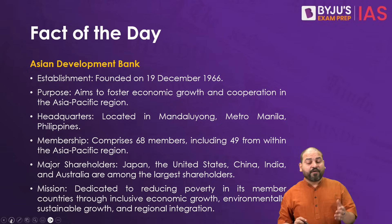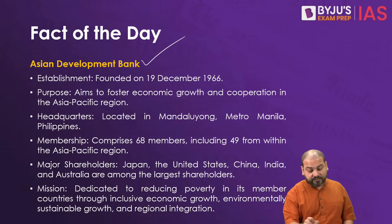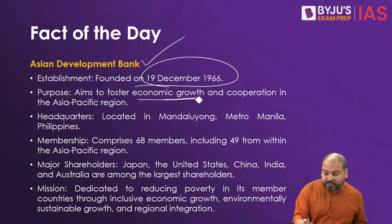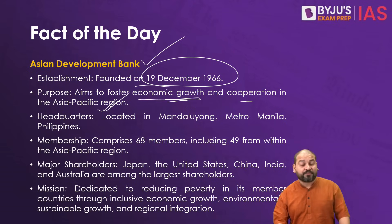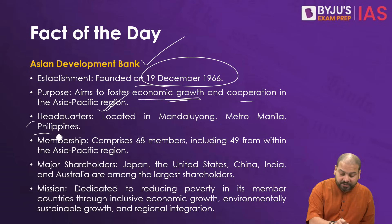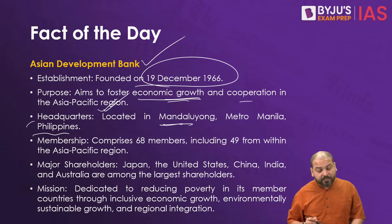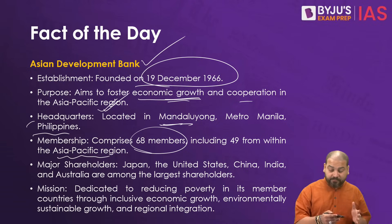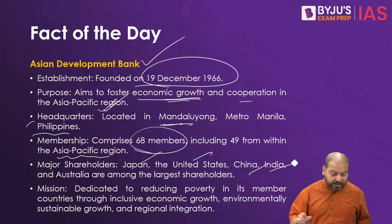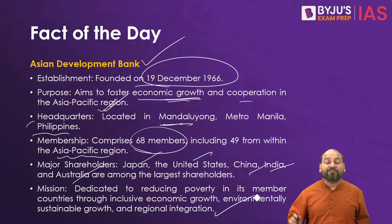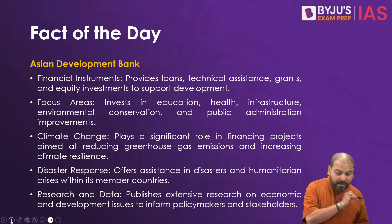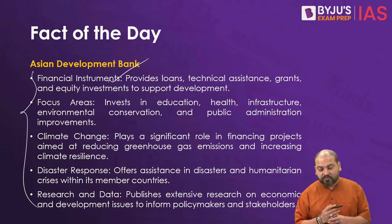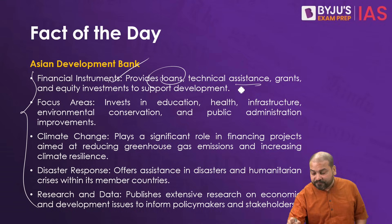Let us come to the fact of the day — the Asian Development Bank, which was established on 19 December 1966 with the purpose of fostering economic growth and cooperation in the Asia-Pacific region. Its headquarters is in Manila, Philippines. Membership is around 68 countries, 49 of them from the Asia-Pacific region. Some of the biggest shareholders include Japan, USA, China, India, and Australia. You can see its mission as well — it's a very important bank. They provide financial instruments such as loans and technical assistance.